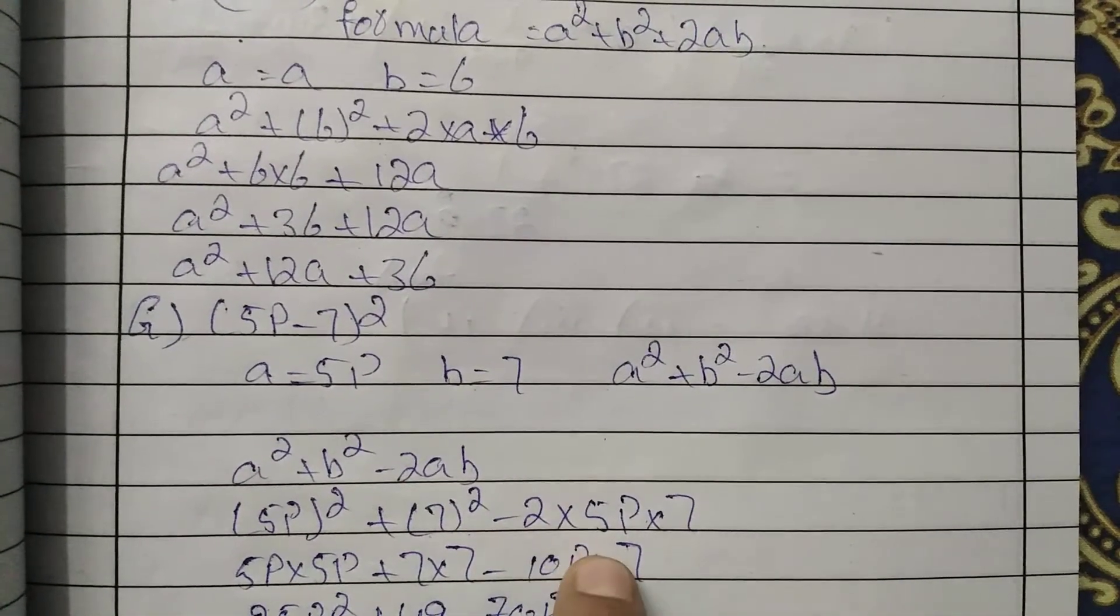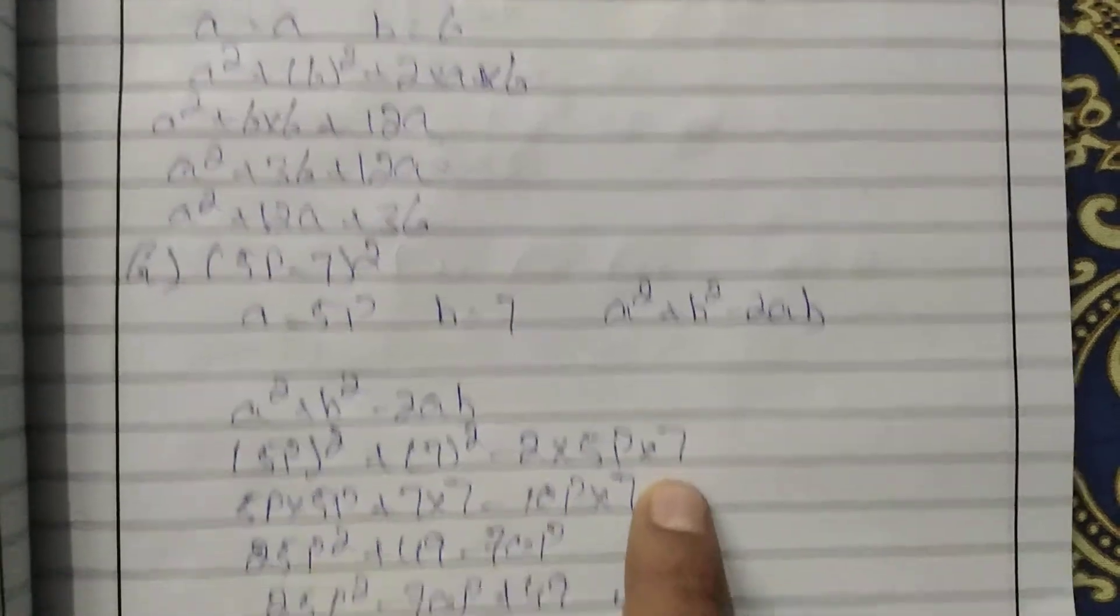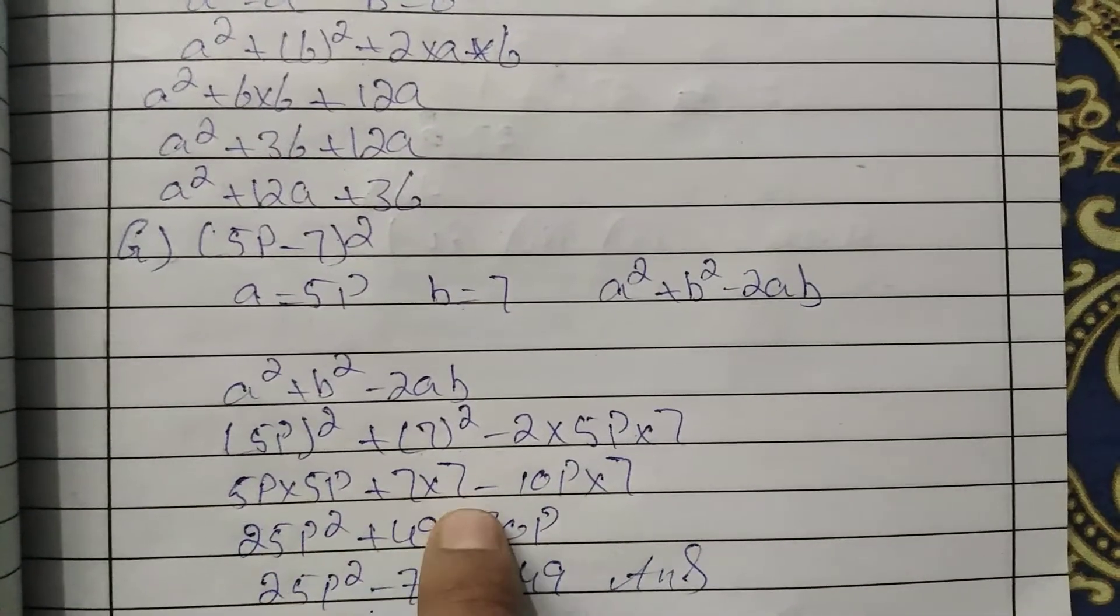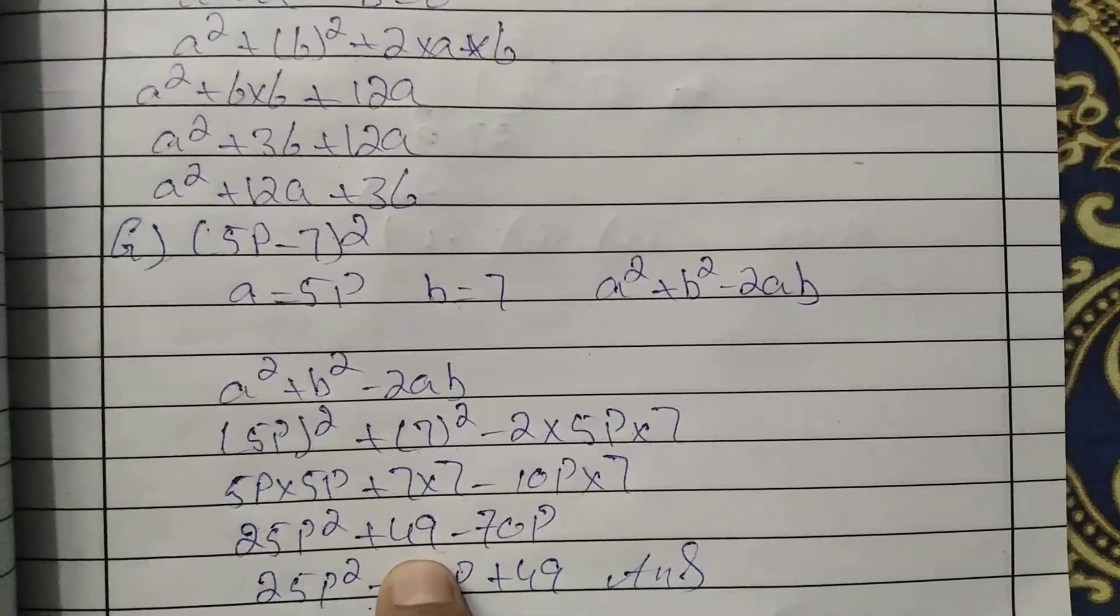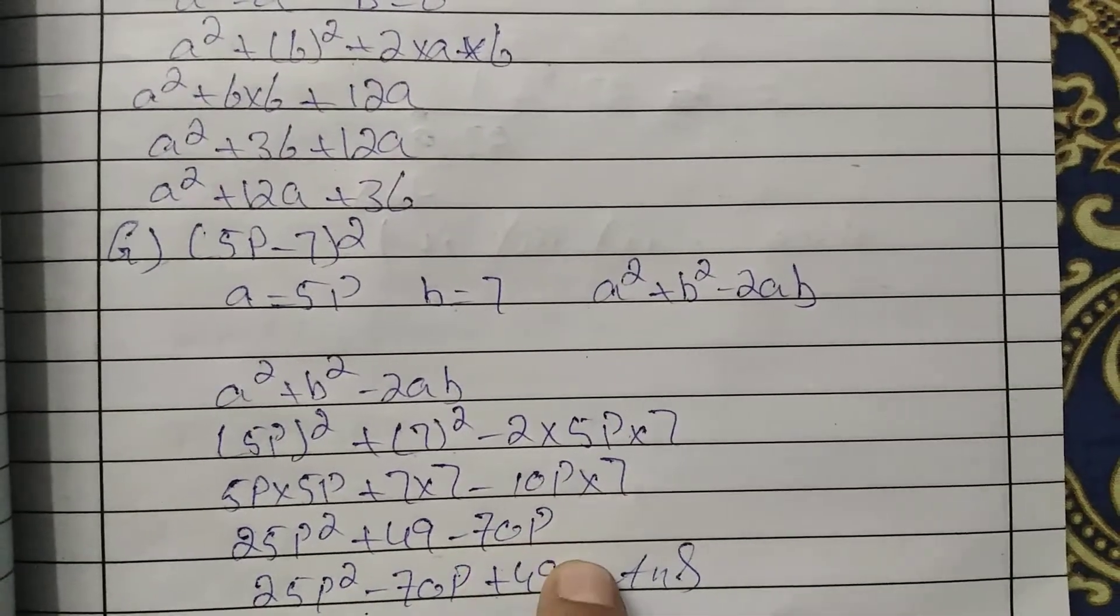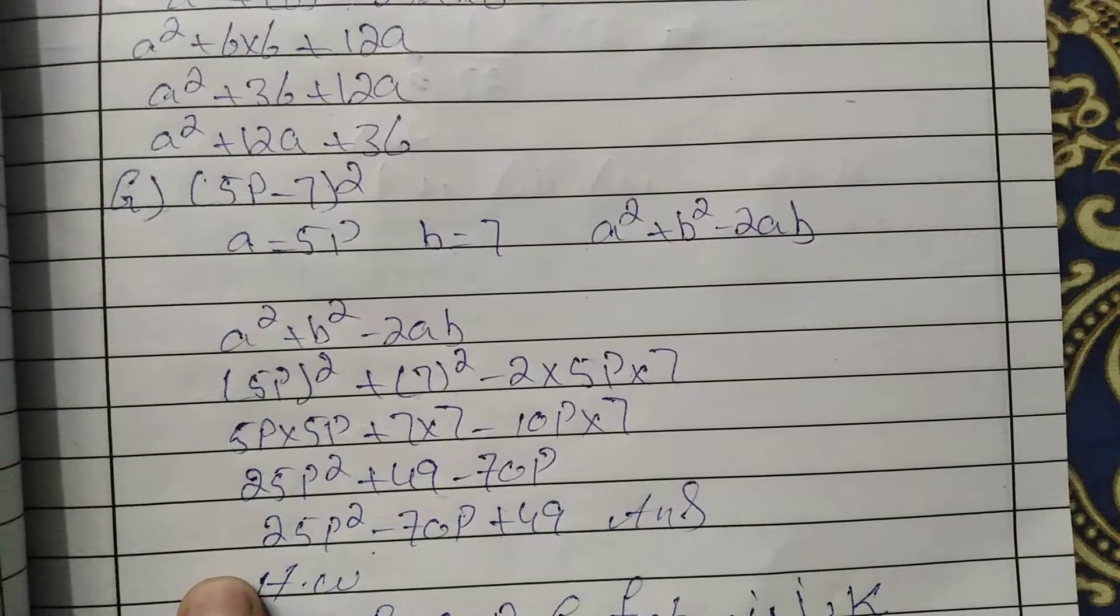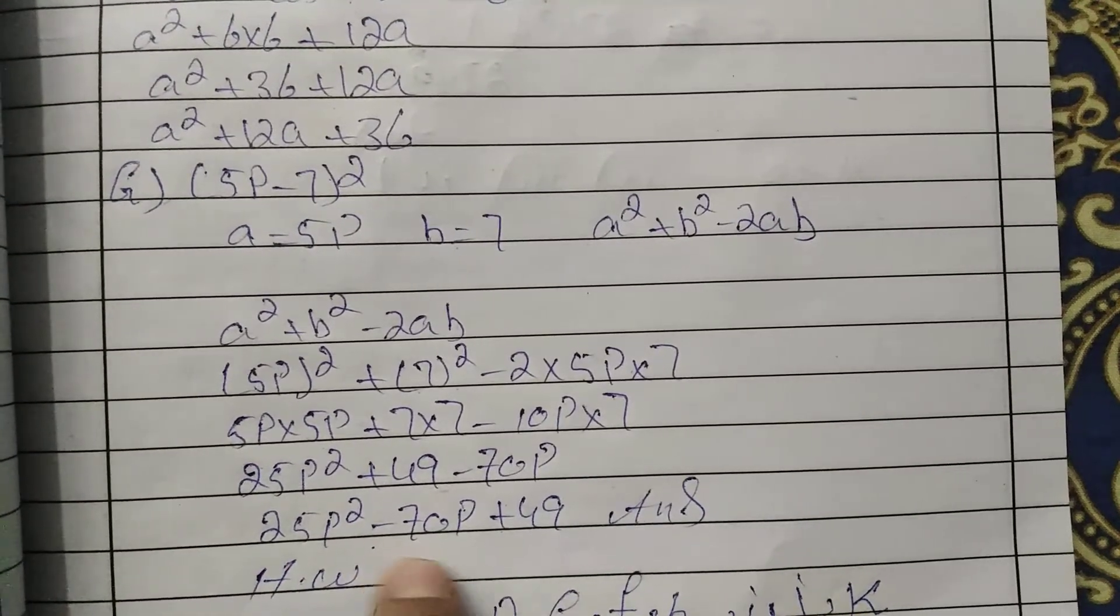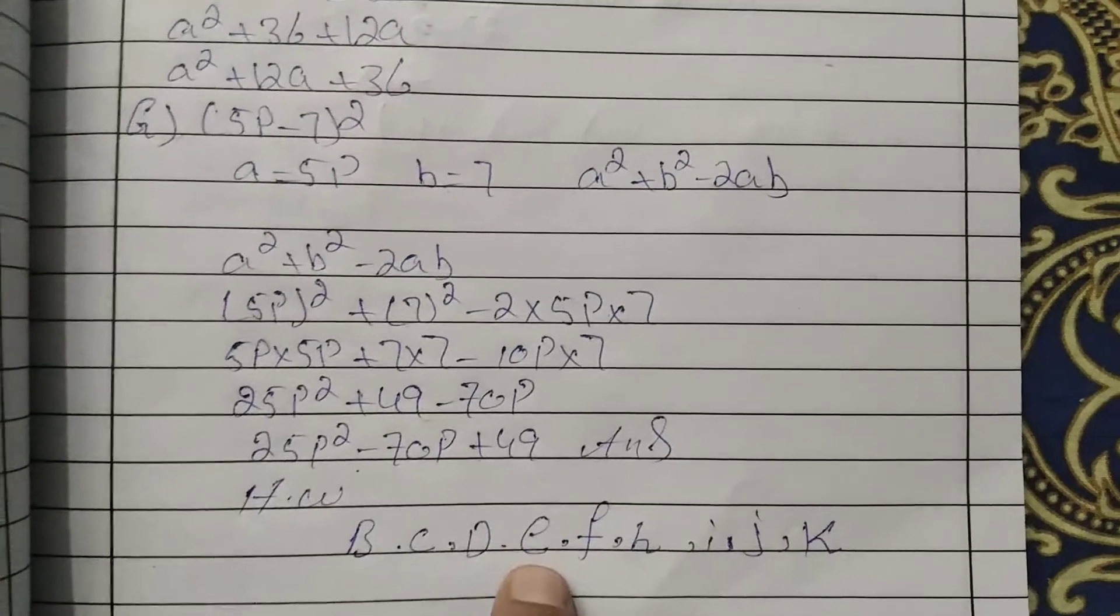Instead of a: 5p, instead of b: 7. 5p multiplied by 5p is 25p². 7 squared equals 49. 2 times 5p times 7 is 70p. We arrange these numbers: 25p² - 70p + 49. Homework: b, c, d, e, f, h, i, j, k.